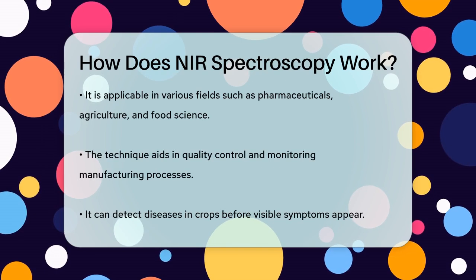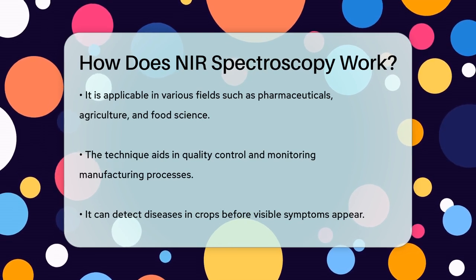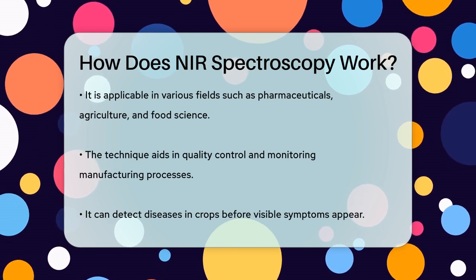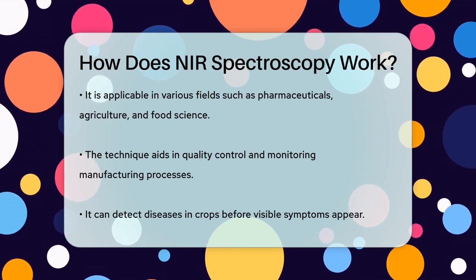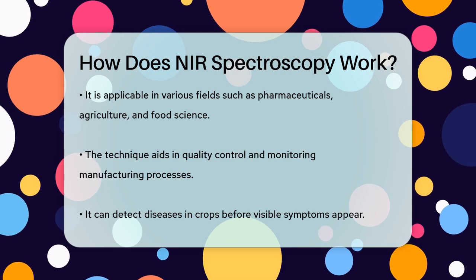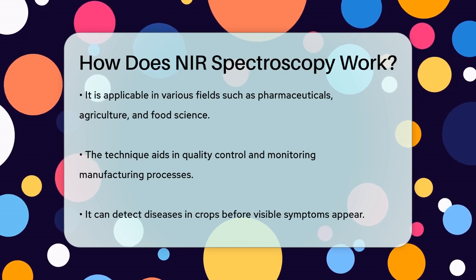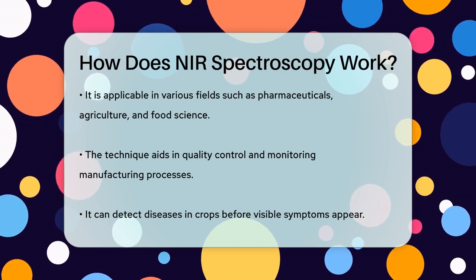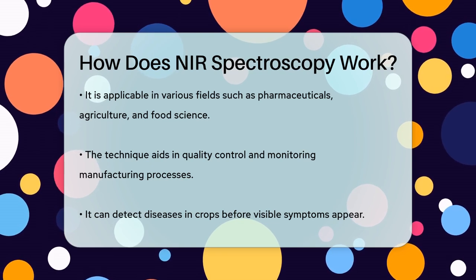NIR spectroscopy is used in many fields, including pharmaceuticals, agriculture, food science, and materials science. It helps in quality control, monitoring manufacturing processes, and even detecting diseases in crops before they become visible.